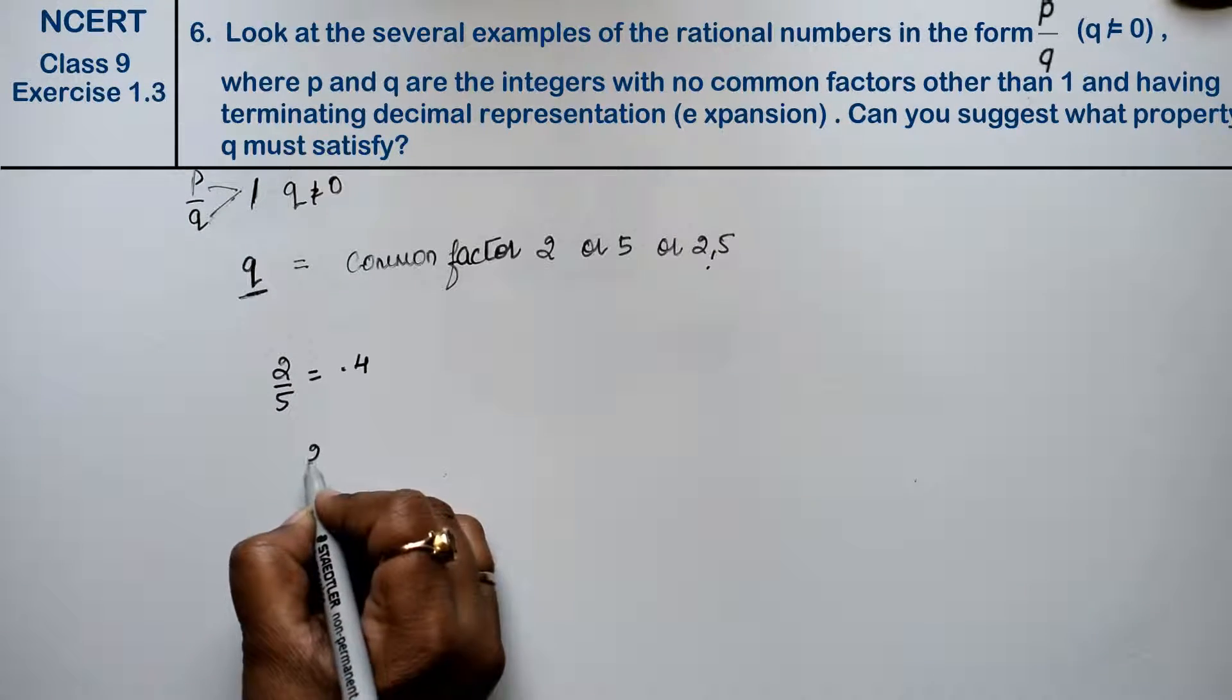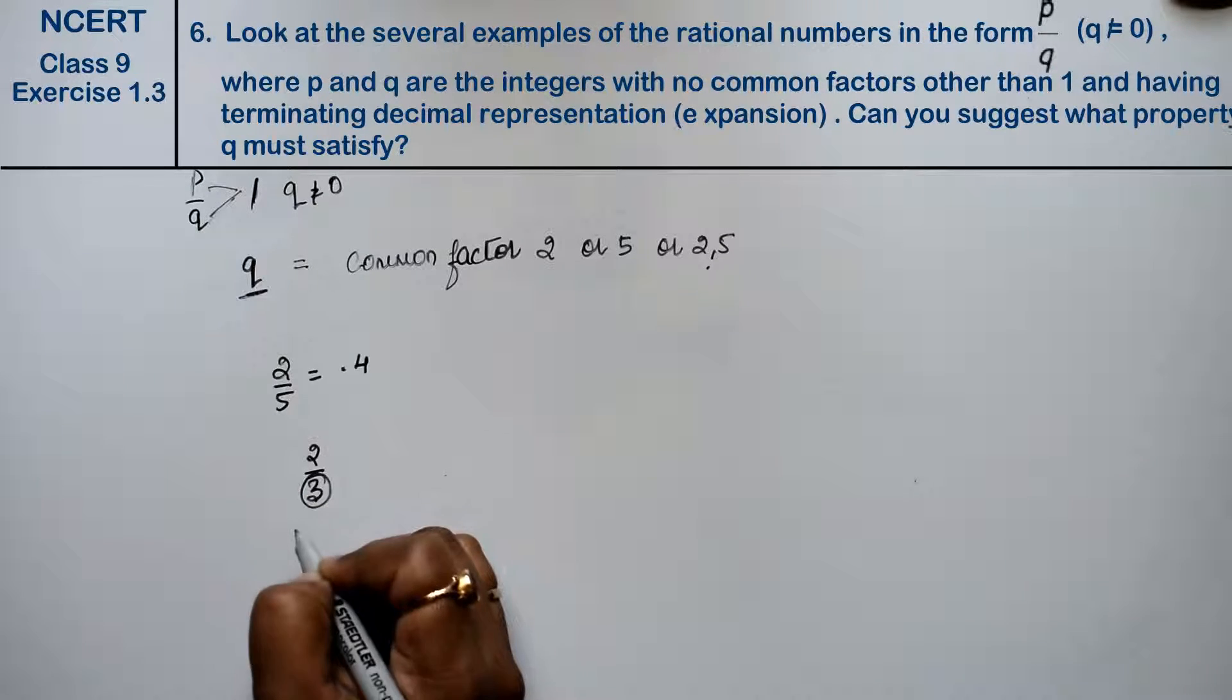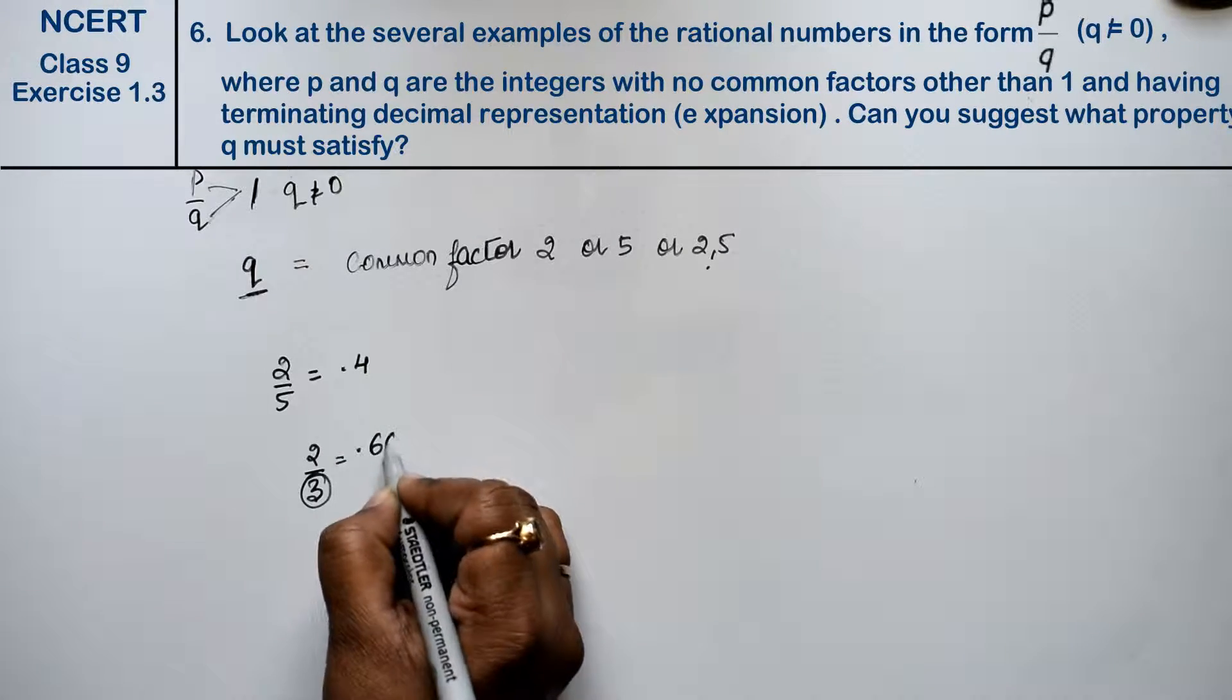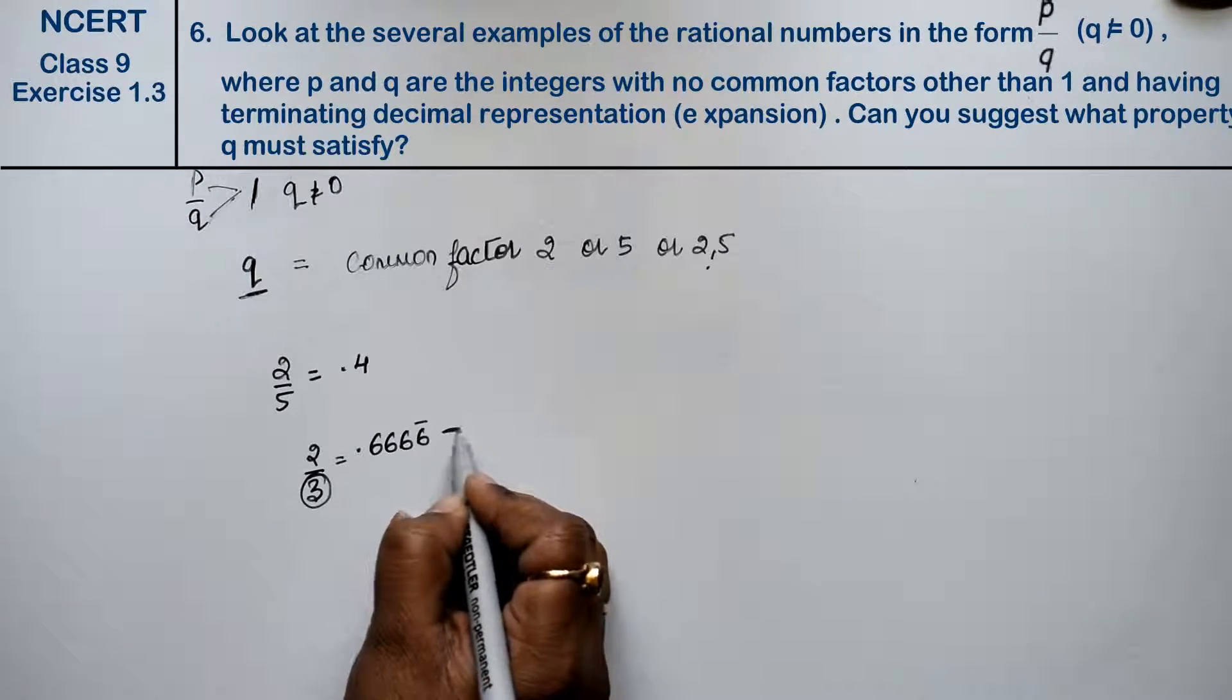But if it is 2 upon 3, if it is either 2 or 5, then what will the answer be? It will be 0.66666. What will the answer be? It will be non-terminating.